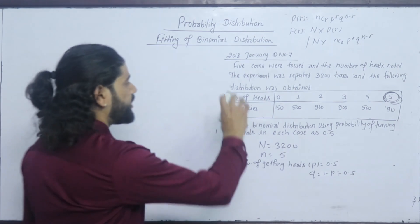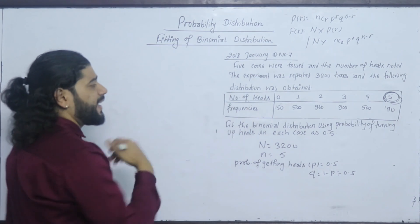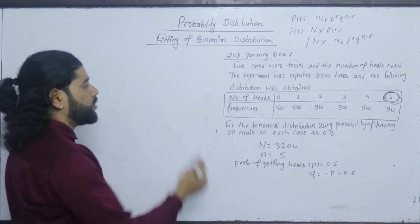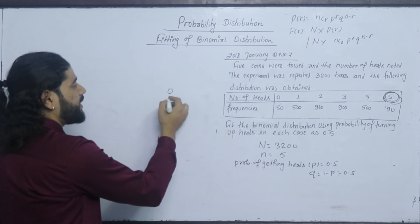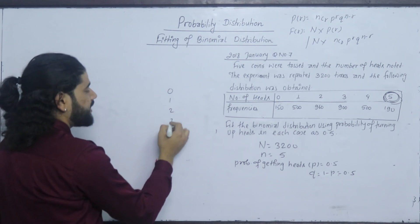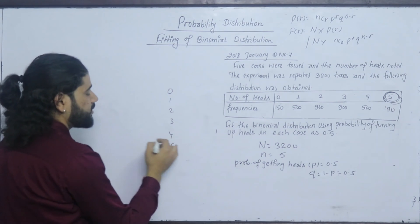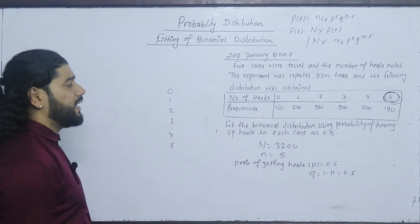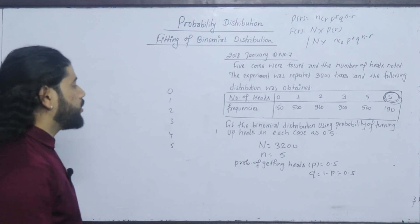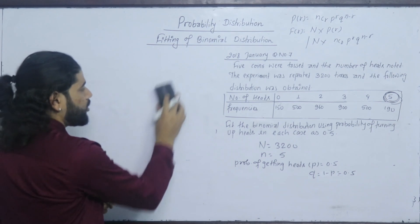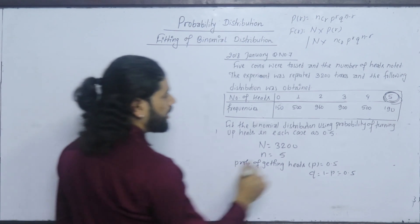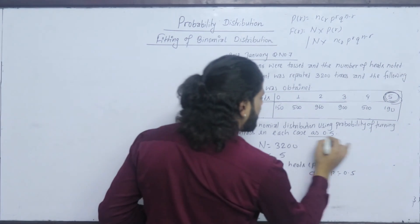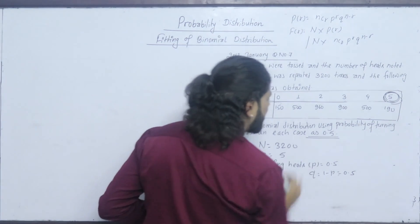This is the real value of the expected value. The observed frequencies are 0 to 8, and the expected frequencies for 0, 1, 2, 3, 4, 5 are to be computed. This is the value of the probability with p equals 0.5.